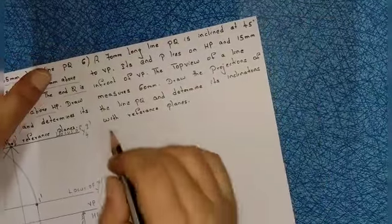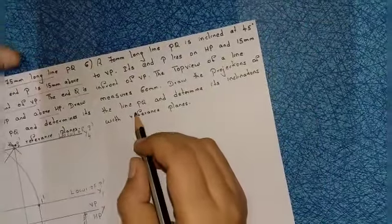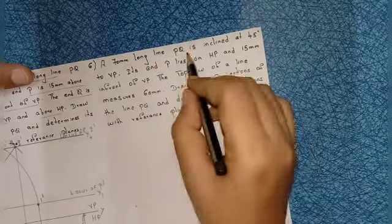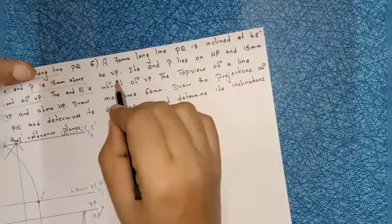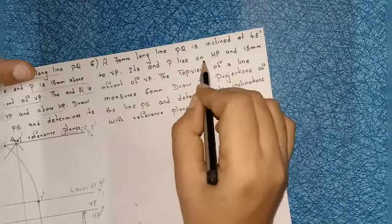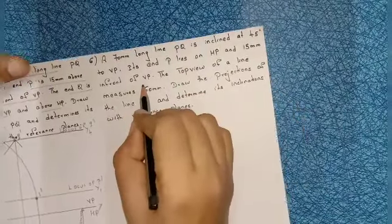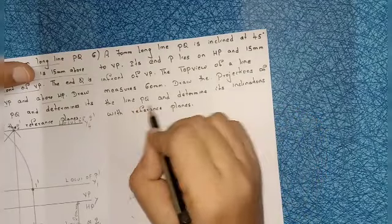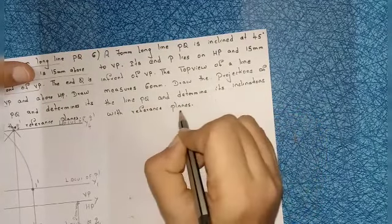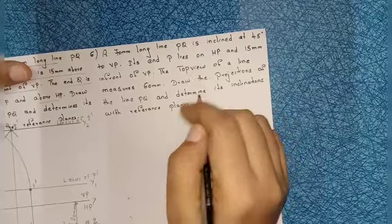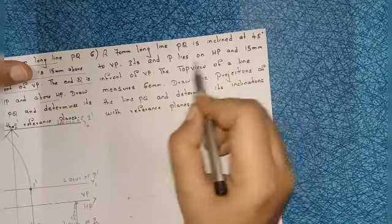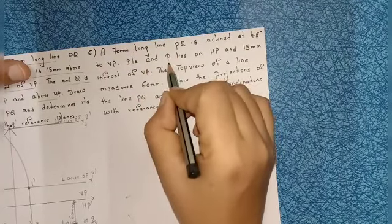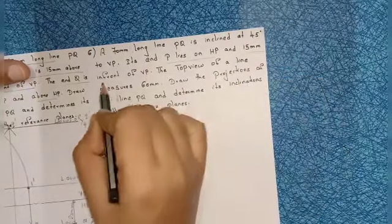Let us start the next problem in projection of straight lines — a line inclined to both planes. Problem six: a 70mm long line PQ is inclined at 45 degrees to VP. Its end P lies on HP and 15mm in front of VP. The top view of the line measures 60mm. Draw the projections of line PQ and determine its inclinations with reference planes. In this question, they mention distances, angle, and top view.